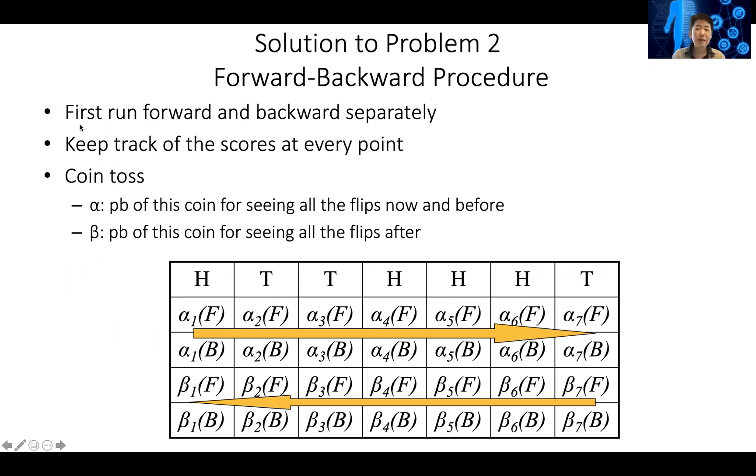The solution to this also has two different solutions. The first is called a forward-backward procedure. Basically, you run the forward procedure first and you get all the alpha numbers. Remember what the alpha numbers mean - they tell us the probability of seeing this coin, of using this coin in order to see all the flips now and before.